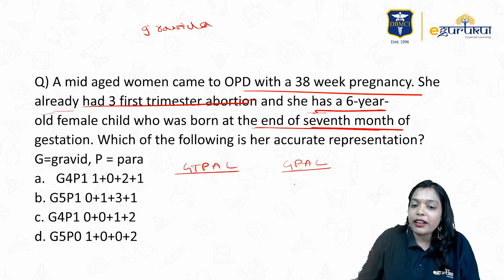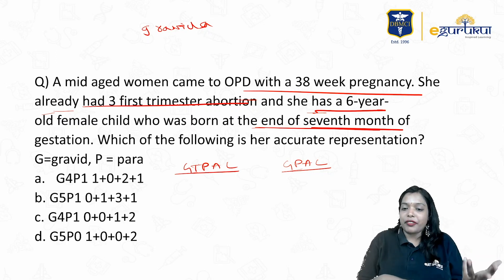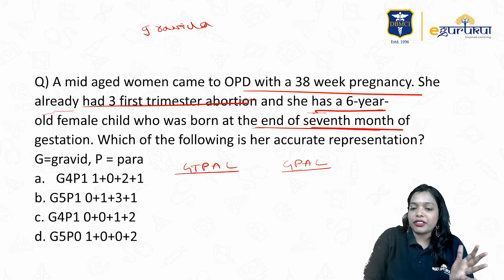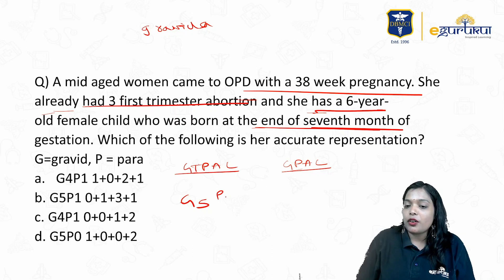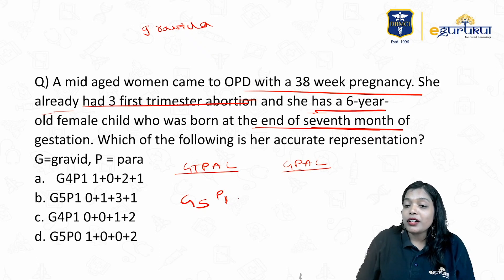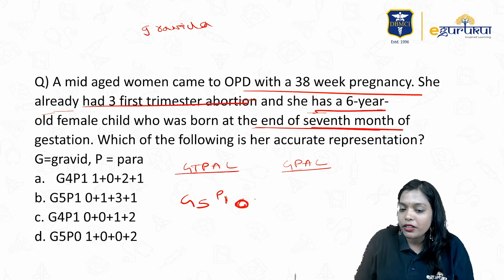Going back to our question — totally how many times did she get pregnant? She is now pregnant, she had previously three abortions, and she has one living child. So on the whole, she is Gravida 5. Only one pregnancy crossed the period of viability, but that was at seven months — so Para 1. Was it term or preterm? That delivery happened at the end of the seventh month, so it is preterm — preterm gets a value of 1.